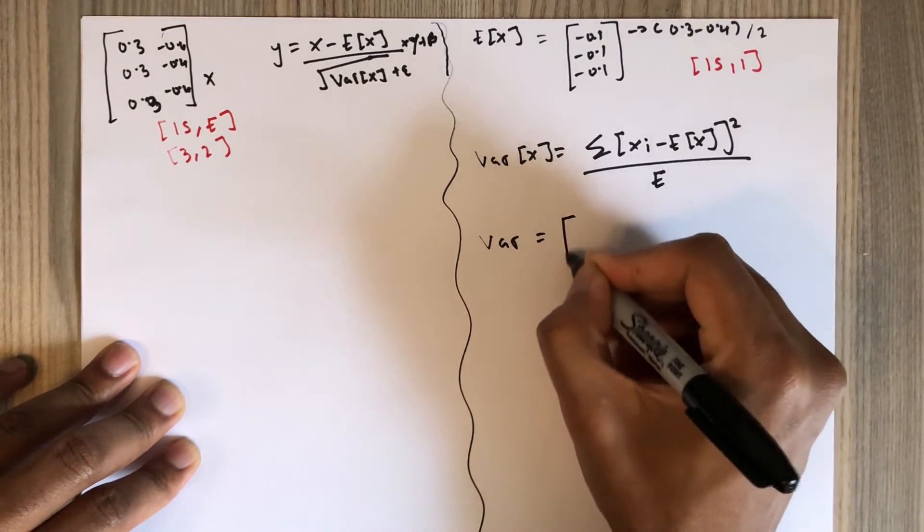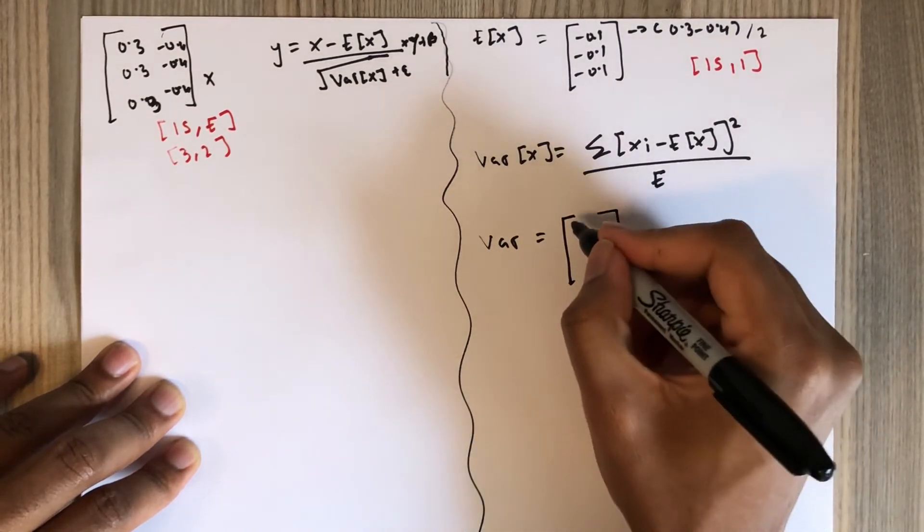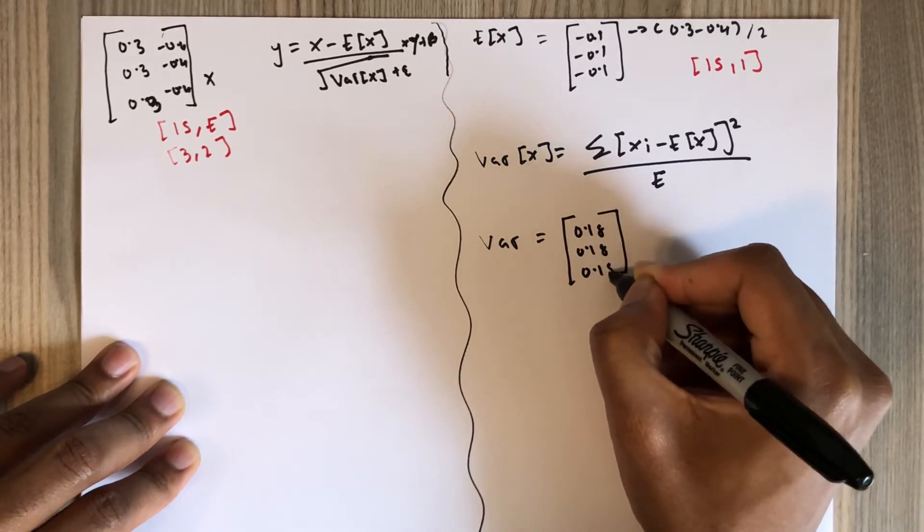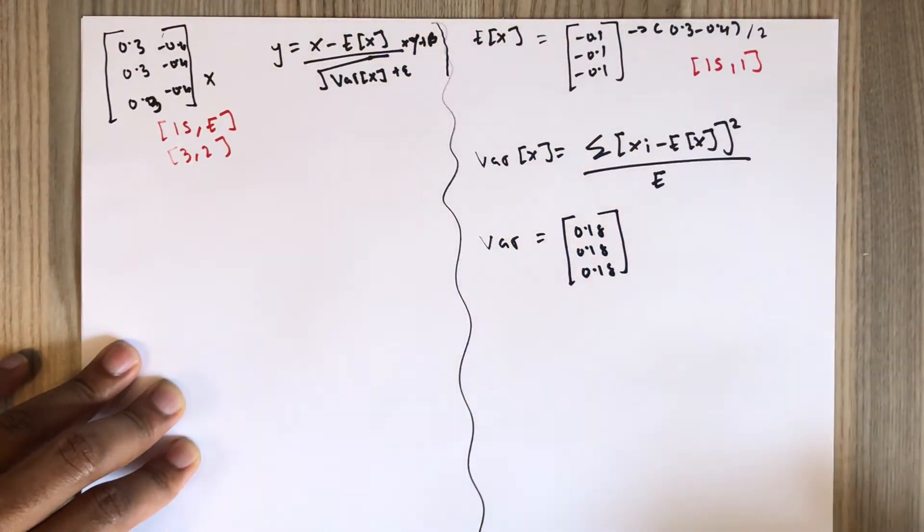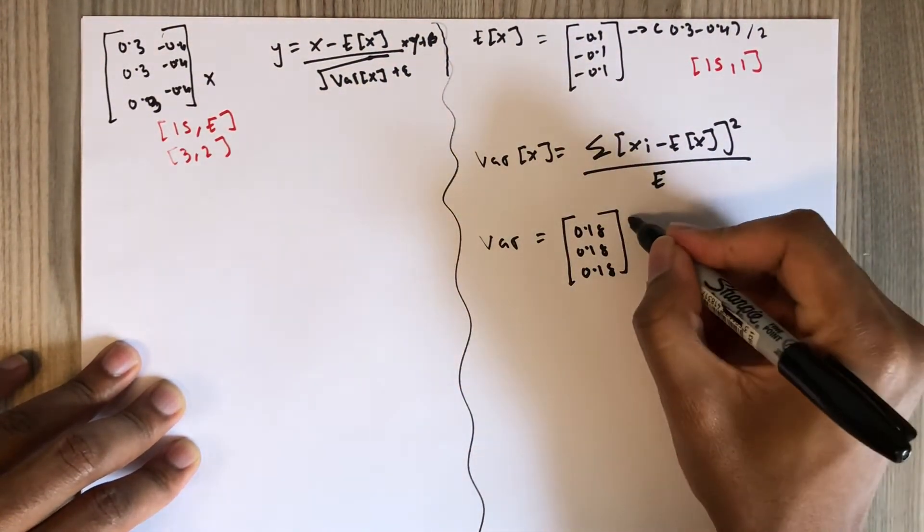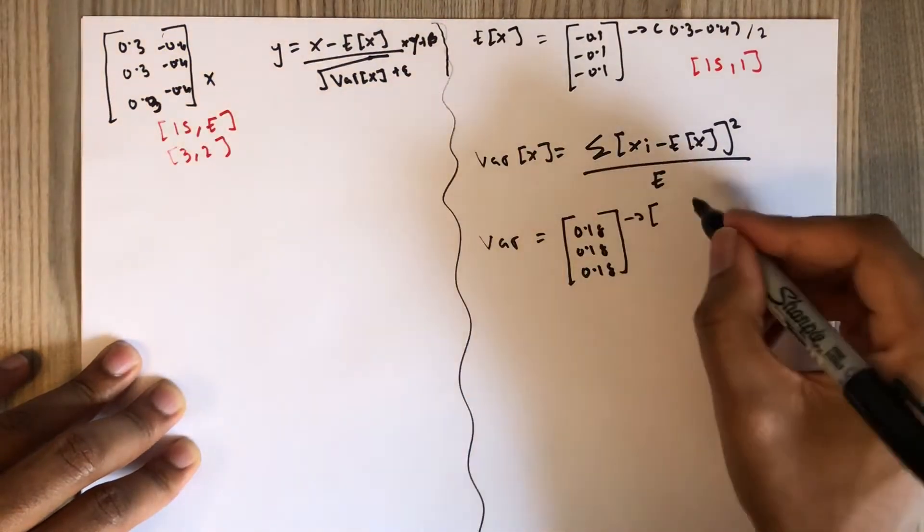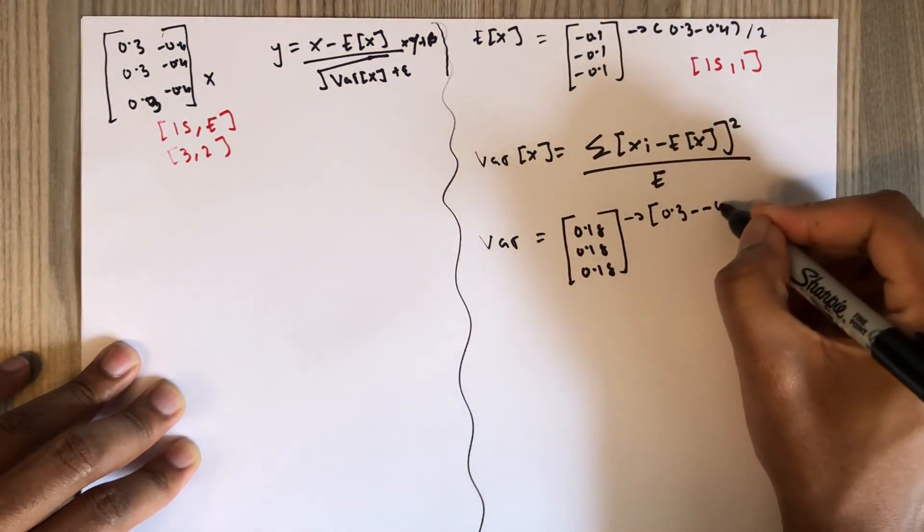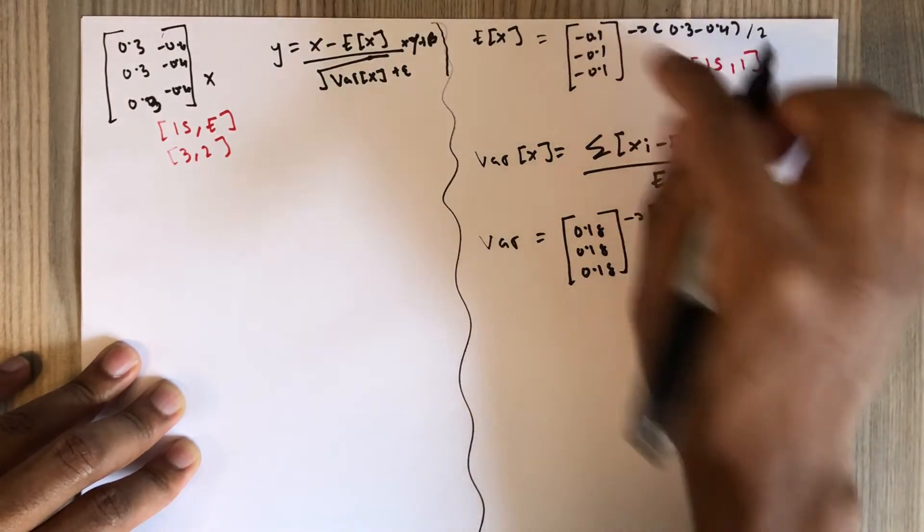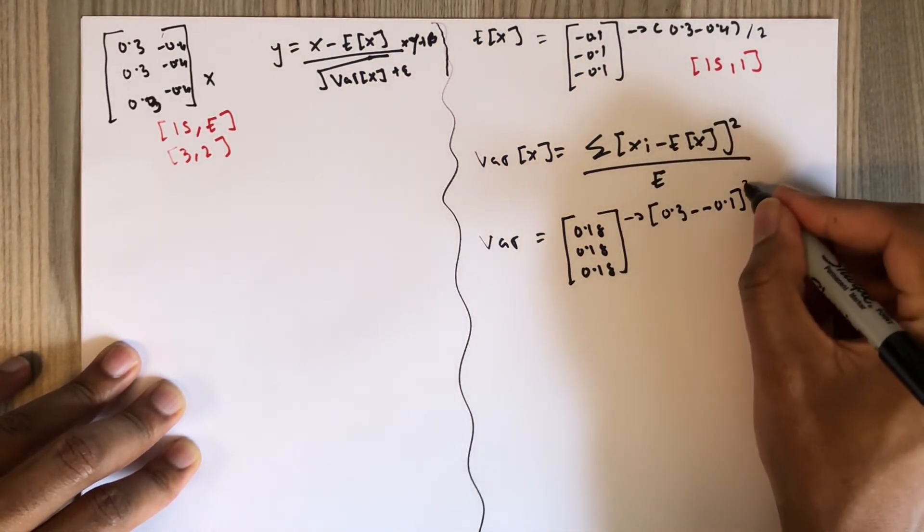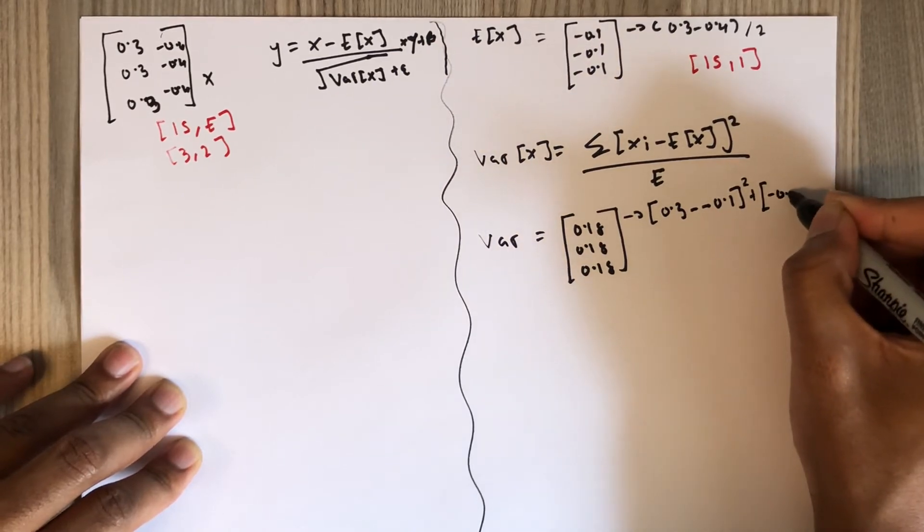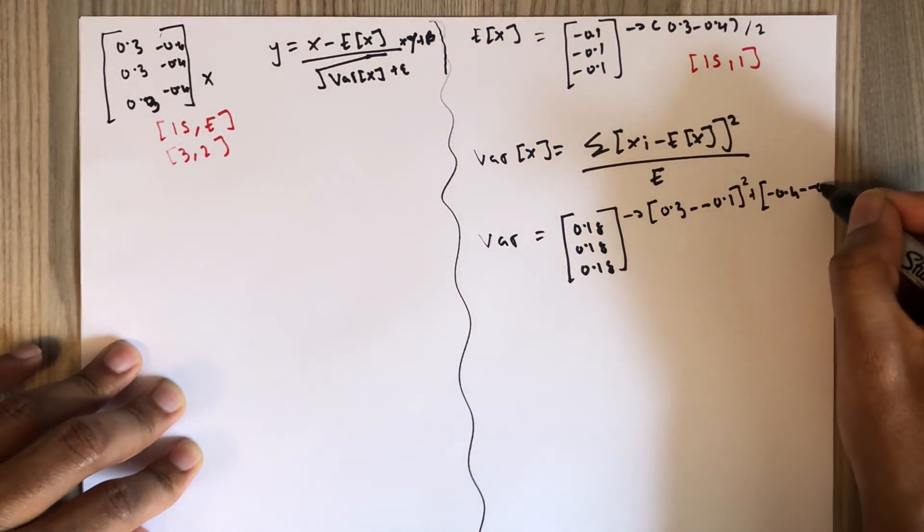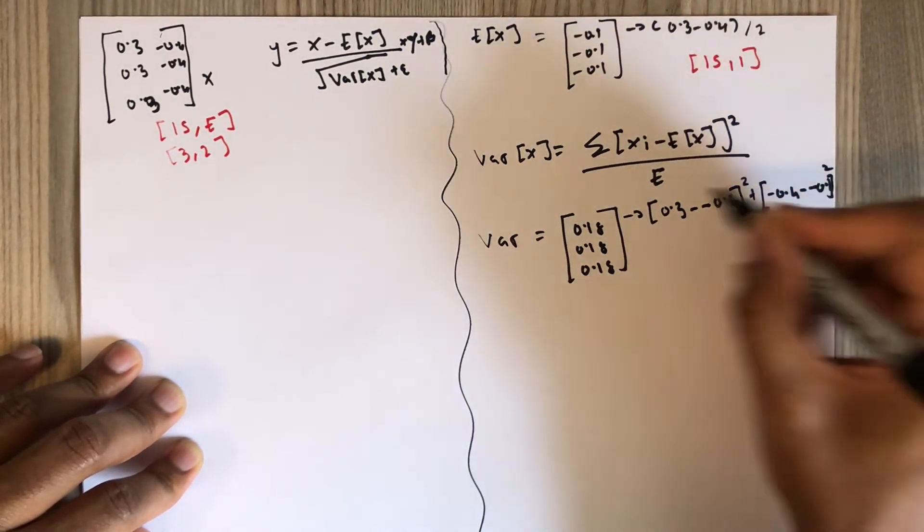I have already calculated the variance: 0.18, 0.18, 0.18. How did I calculate the first 0.18? It is (0.3 - (-0.1))² plus (-0.4 - (-0.1))².